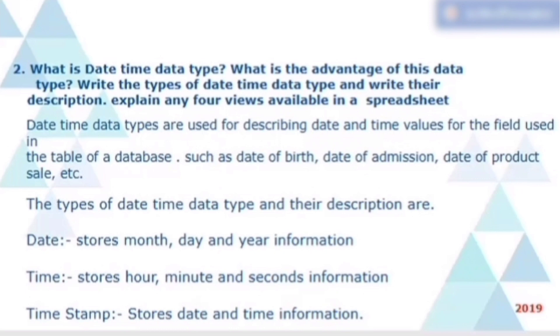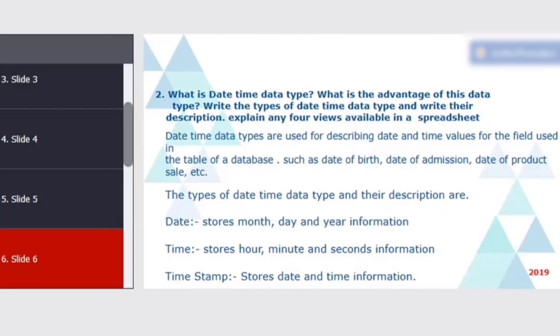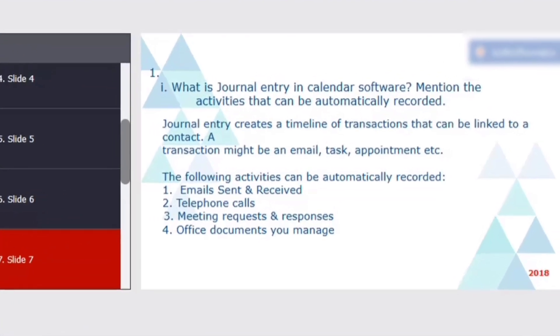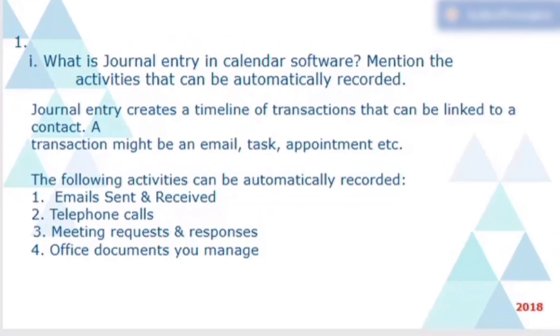This question was asked in 2019. Now, this is the most repeated and expected question on journal entry topic. What is journal entry in a calendar software? Mention the activities that can be automatically recorded. Journal entry creates a timeline of transaction that can be linked to a contact. A transaction might be an email, task, appointment, etc. The following activities can be automatically recorded: email sent and received, telephone calls, meeting requests and responses, office documents you manage. This question was asked in 2018 and most expected question.